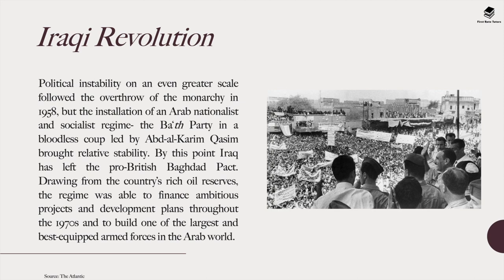When it comes to the Iraqi revolution, there was a lot of political instability, and this happened on an even greater scale following the overthrow of the monarchy in Iraq in 1958. However, the installation of an Arab nationalist and socialist regime — the Ba'ath party — in a bloodless coup led by Abd al-Karim Qasim brought about relative stability. Drawing from the country's rich oil reserves, the regime financed ambitious development plans throughout the 1970s and built one of the largest and best-equipped armed forces in the Arab world.